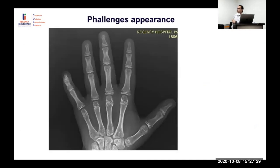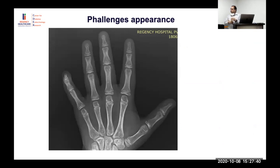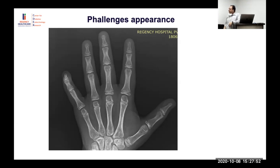Regarding phalanges, the epiphyses appear from proximal to distal. You can simply look at whether the proximal, middle, or distal interphalangeal epiphyses have appeared — this gives a picture of different ages.